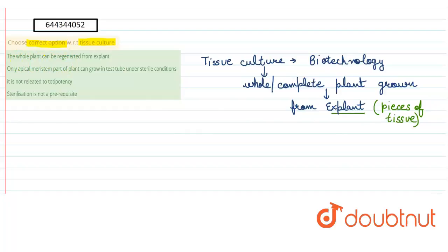First one: the whole plant can be regenerated from explant - this is true. Second one: only apical meristem part of plant can grow in test tube under sterile conditions - this is false because, as we have discussed, complete plant can be grown. Third one: it is not related to totipotency - this is also false.